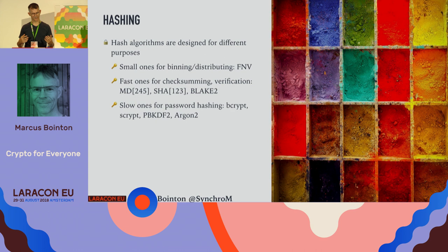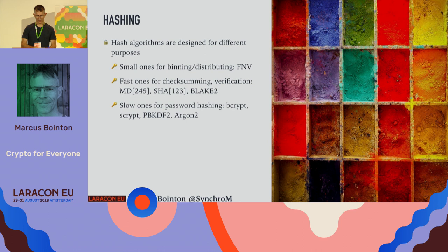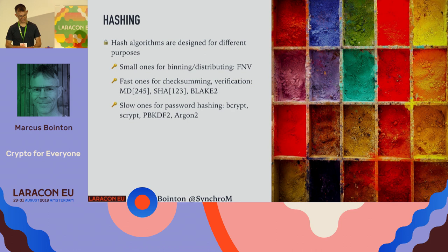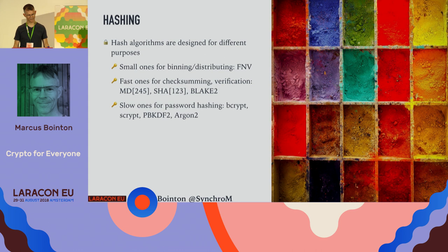Then we have fast ones, used for checksums and verification — making sure data has reached the other end intact. If you want to compare two 100-gigabyte files, calculate a hash on each end and compare. These don't need security properties. That covers algorithms like the MD family, the SHA family, and more recently Blake2 — in particular Blake2b. Then we have slow ones for password hashing, because we don't want people to test different values to reverse the hash. This is why using MD5 or even SHA2 for password hashing is a poor choice.